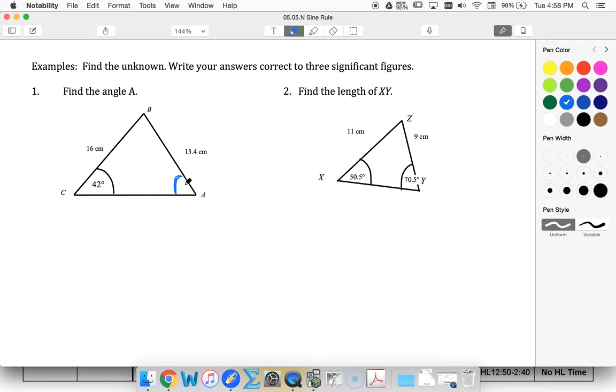So since I want to know an angle, I'm going to put that on top. Sine A over the matching side, that is 16. Sine rule tells me this must be equal to sine. I know this angle, so I'm going to use that over the side across from it, 13.4.